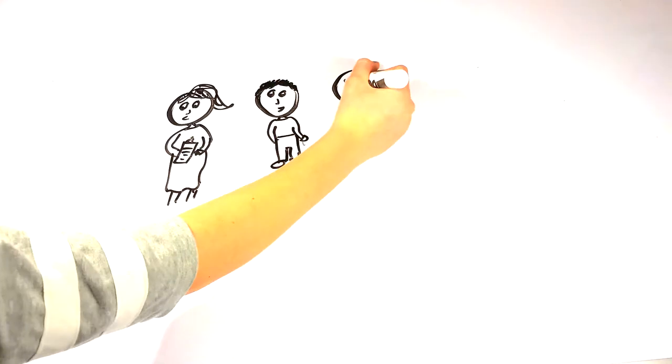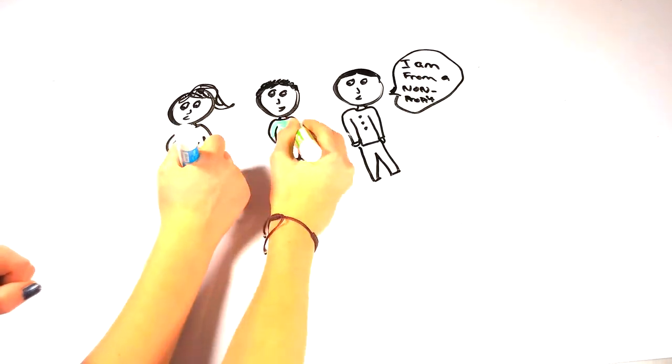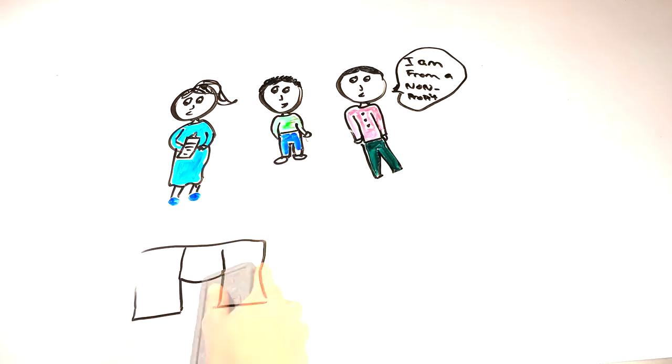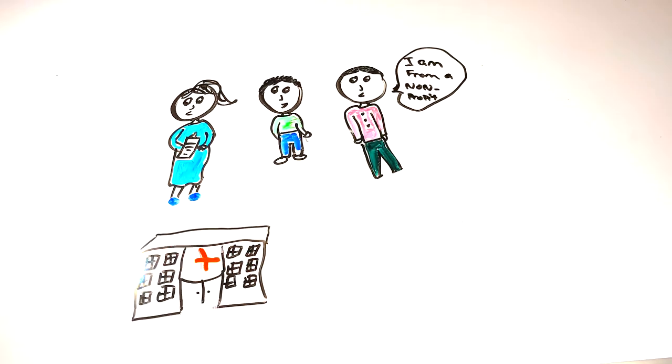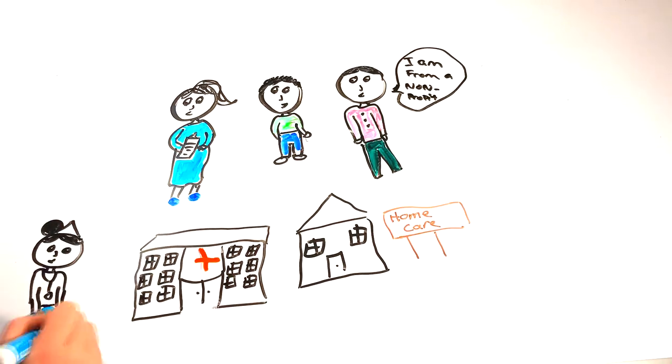How might one become appointed as a guardian? An adult person, legally authorized state official, or a non-profit organization or business may be appointed as a guardian of an adult with intellectual disability. A hospital or nursing home, however, cannot be appointed.